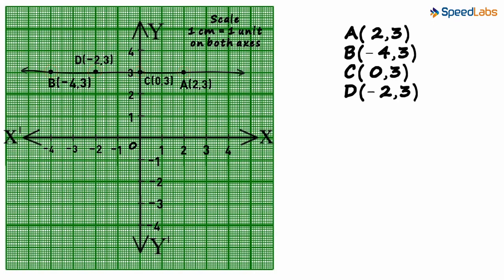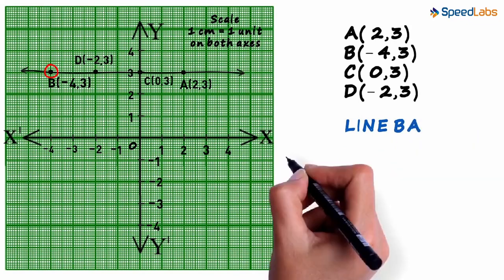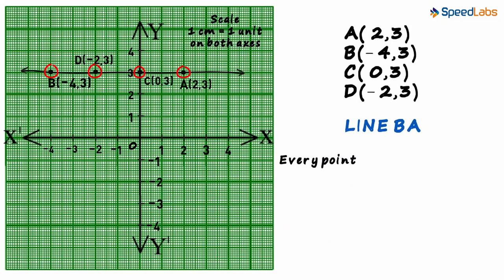After joining the points, what we get is line BA. And every point on line BA is equidistant from the x axis. Exactly 3 units away from the x axis.